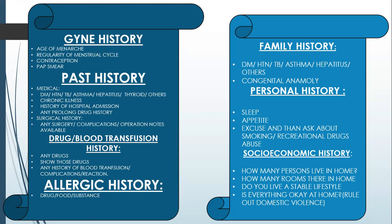In the family history, besides asking about diabetes, hypertension, TB, asthma, hepatitis, or any other problem, please — in the Ops history — also inquire about congenital anomalies.